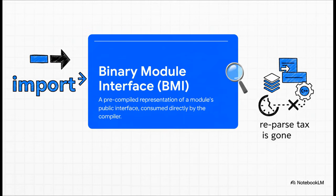So now when the compiler sees import STD, it doesn't have to go open some massive text file and parse it all over again. No. It just opens this compact, efficient, binary BMI file and instantly knows everything it needs to know. Just like that, the reparse tax is completely gone.